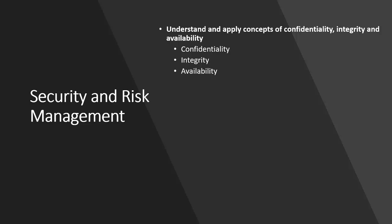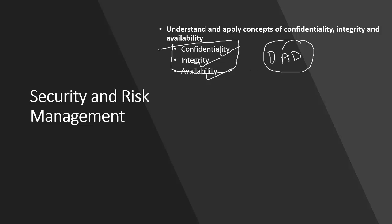It is very important to understand the CIA and what solutions and principles are available to achieve it. The opposite of CIA is DAD — Disclosure, Alteration, and Destruction. The opposite of confidentiality is disclosure, the opposite of integrity is alteration, and the opposite of availability is destruction. The primary objective of information security governance is to maintain the CIA of assets.